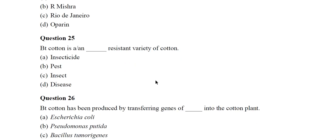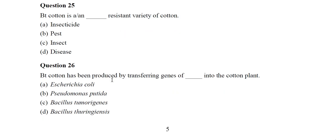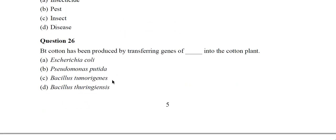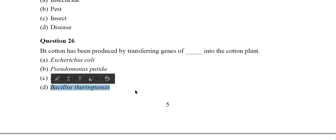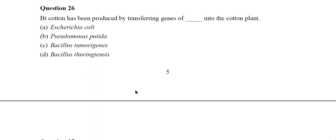Question 25: Bt cotton is an insect-resistant variety of cotton. Bt cotton has been produced by transferring genes of Bacillus thuringiensis into the cotton plant. Option D is the correct answer.